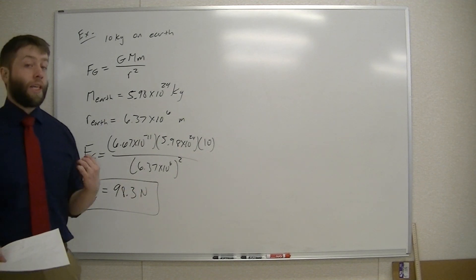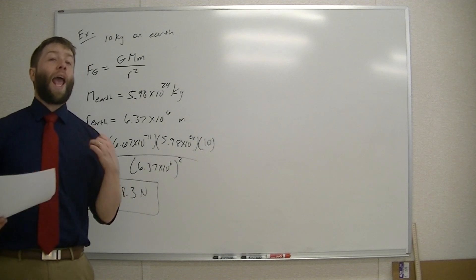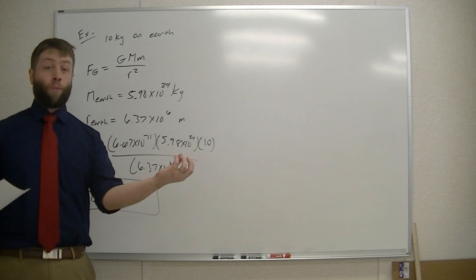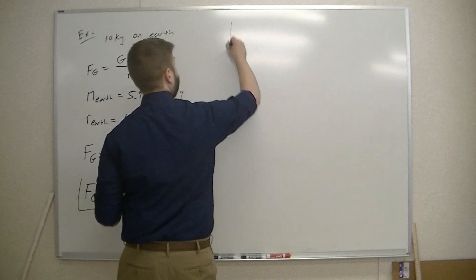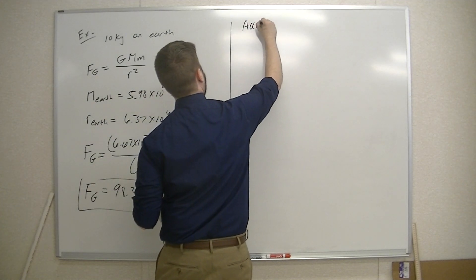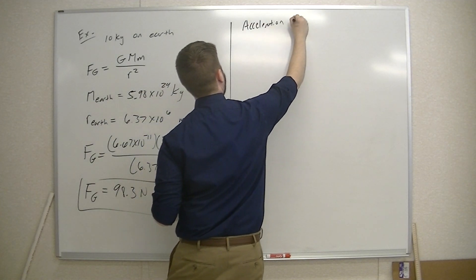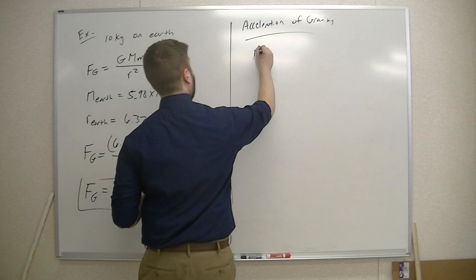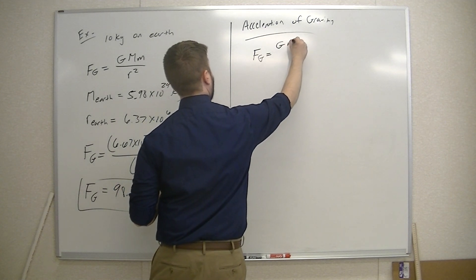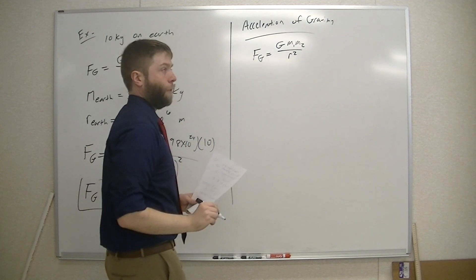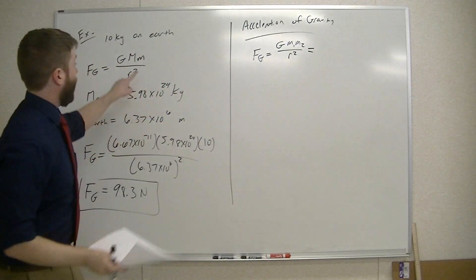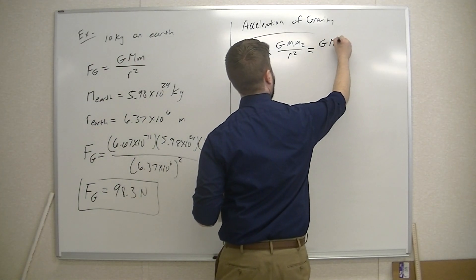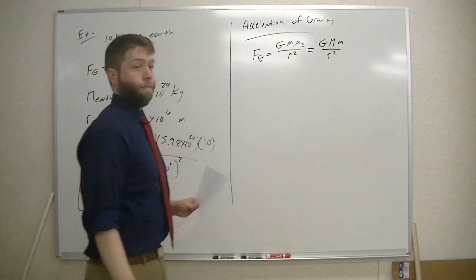This is because you can actually calculate the acceleration of gravity on any object — the acceleration of the moon, the acceleration on Mars, the acceleration of a simple mass — using the following technique. To calculate the acceleration of gravity, notice that the force of gravity is equal to big G, M1, M2, over R squared. We're going to rewrite this with a big mass and a little mass: force of gravity equals big G times big mass times little mass divided by R squared.